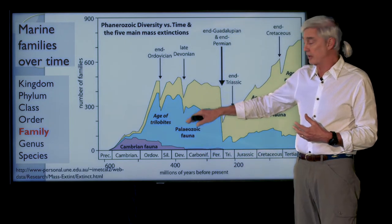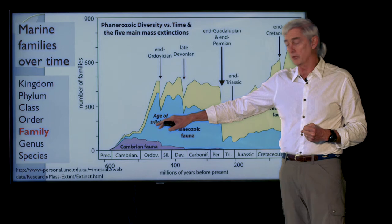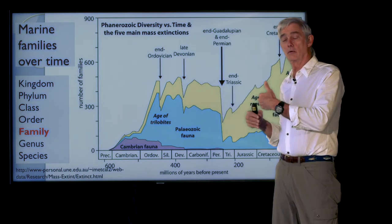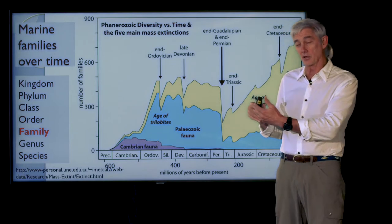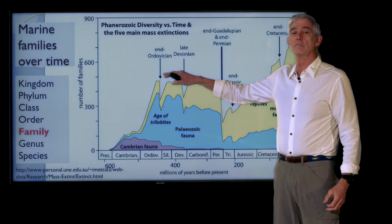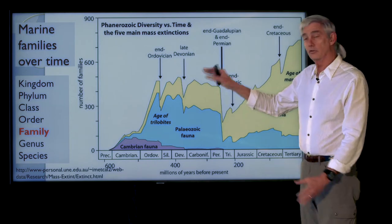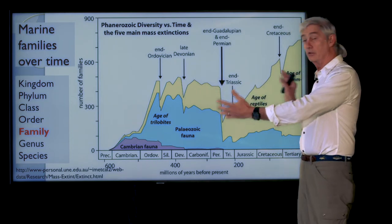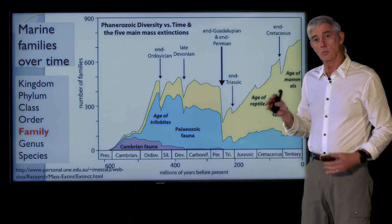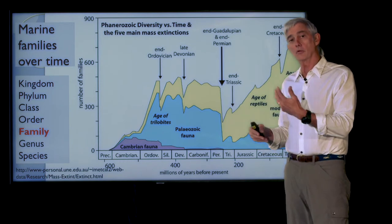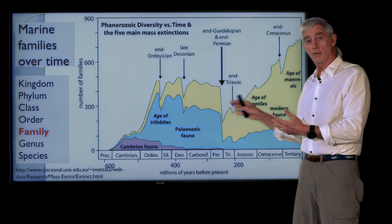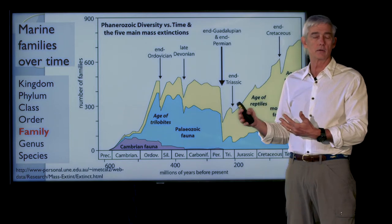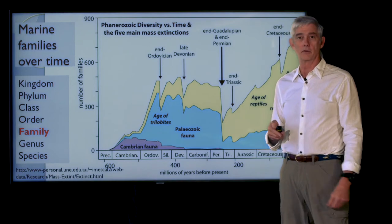What this shows is that since the Cambrian, the number of families rocketed up over time until the period of time right after the Cambrian, called the Ordovician, at which point there was a dramatic decline. Those dramatic declines are mass extinctions. There have been five of them over the history of animal life, and we'll chart through those. We'll also talk about organisms that made it through some or even all of those mass extinctions and what the fossil record tells us about diversity over time.